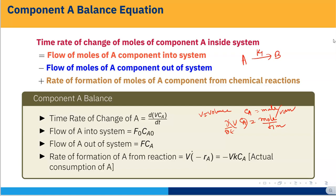The time rate of change of A is d(V·CA)/dt. The flow of A into the system is F0·CA0, where F0 is the volumetric flow rate and CA0 is the concentration of A at the inlet. The flow of A out of the system is F·CA, where F is the volumetric flow rate and CA is the outlet concentration. The rate of formation of A from reaction is V·(−RA), and since RA equals K·CA for a first order reaction, this becomes −V·K·CA, with the minus sign indicating consumption.